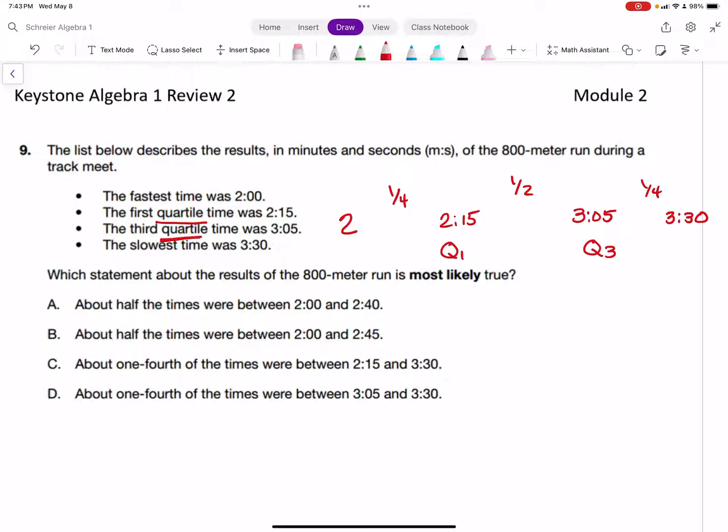About one-fourth of the times were between 2:15 and 3:30 - that's not true because we can see it's a half and a quarter, so three quarters. Answer D says about one-fourth were between 3:05 and 3:30, after the third quartile. That is the correct answer.